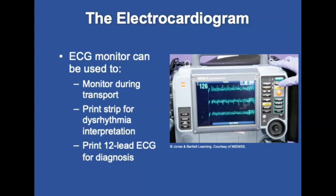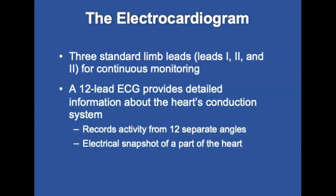The electrocardiogram is a graphic record of the changes in voltage that occur in the heart muscle during depolarization and repolarization. It can be used to continuously monitor cardiac rhythm during transport, print out a rhythm strip for dysrhythmia interpretation, and print out a 12-lead ECG for specific diagnosis. Three standard limb leads — leads 1, 2, and 3 — are used during transport to identify changes in heart rhythm.